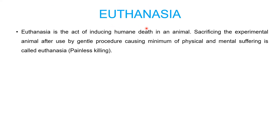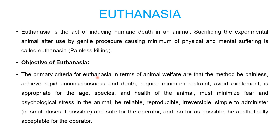The next topic is euthanasia. Euthanasia is an act of inducing humane death in an animal — sacrificing the experimental animal after use by a gentle procedure causing minimum physical and mental suffering. In short, euthanasia is painless killing. The primary criteria are that the method be painless, achieve rapid unconsciousness and death, require minimum restraint, avoid excitement, be appropriate for the age, species and health of the animal, minimize fear and psychological stress, be reliable, reproducible, irreversible, simple to administer, and safe and aesthetically acceptable for the operator.